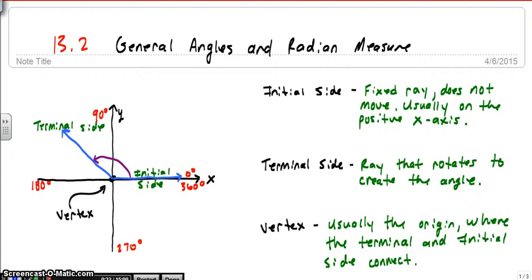Here we have an angle in blue. And I have labeled the initial side and the terminal side. The initial side is fixed, and for our purposes, we're going to almost always have the initial side starting at the origin and going out across the positive x-axis. The terminal side is the side that rotates. So this blue side here, this terminal side, is going to start here and rotate to our angle, whatever that may be.